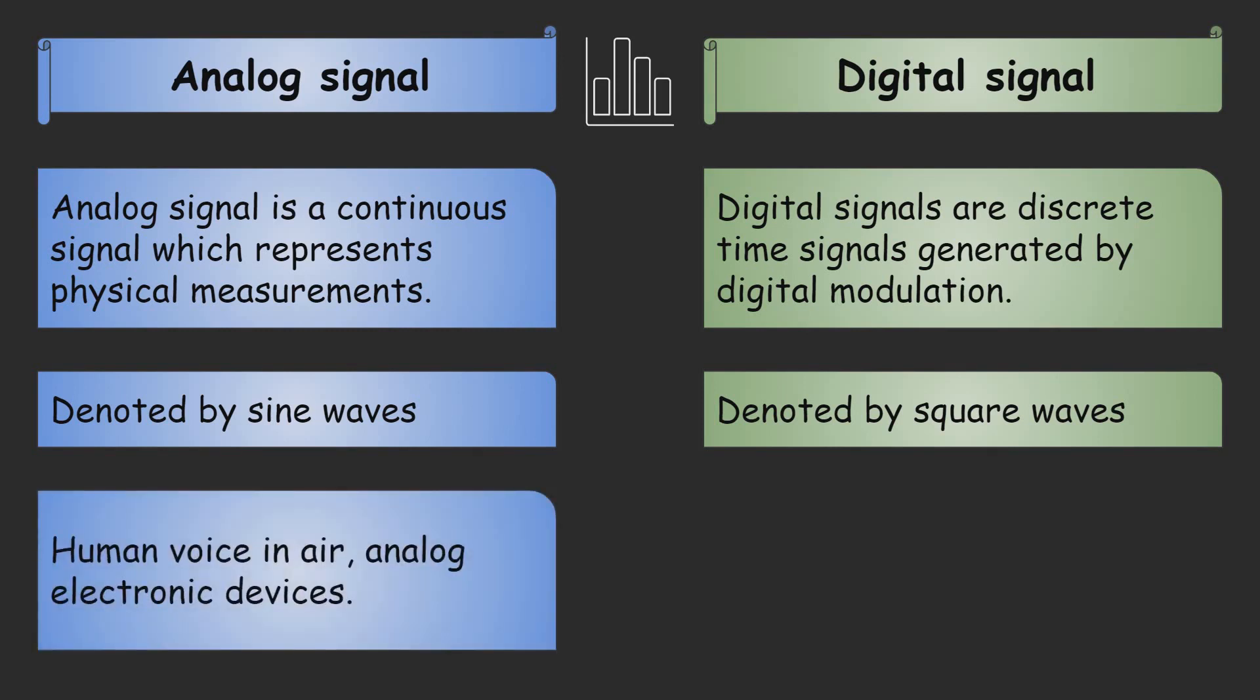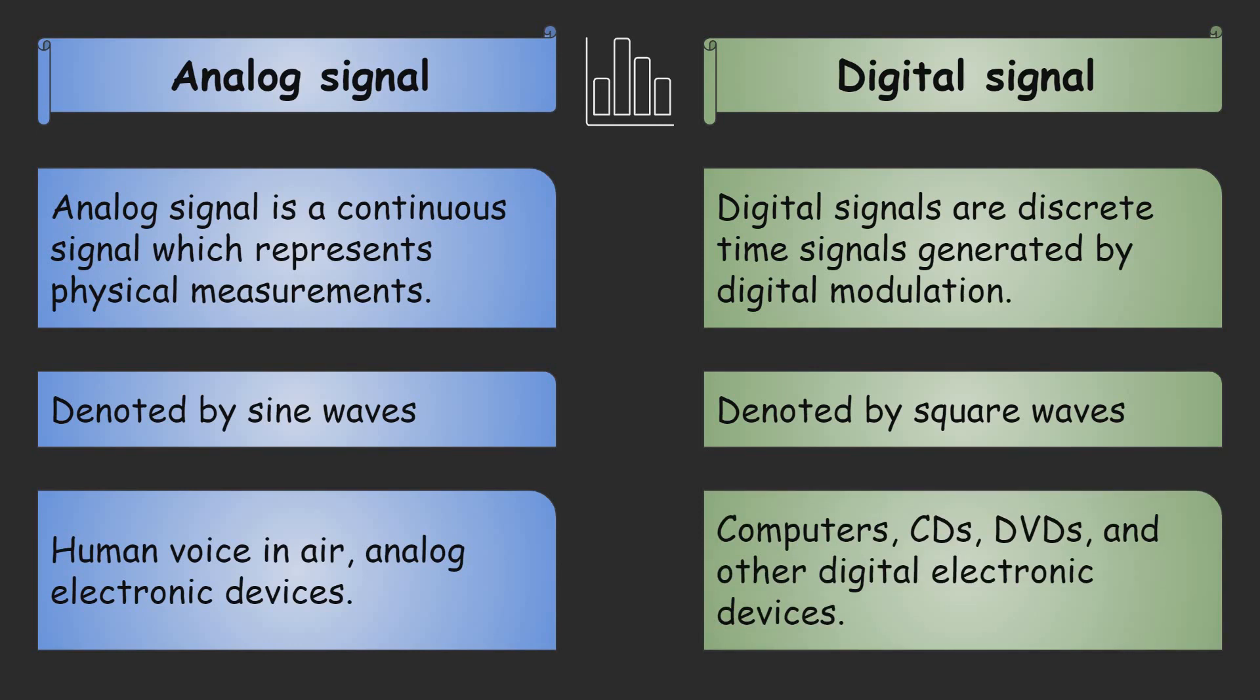Example of analog signal: human voice in air and analog electric devices are examples of analog signal. In these devices analog signals are used.